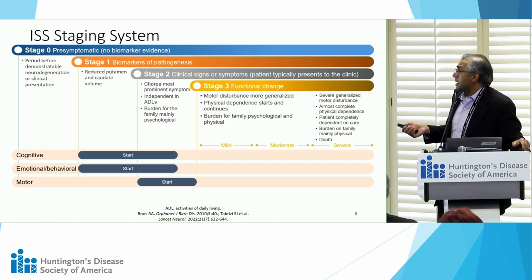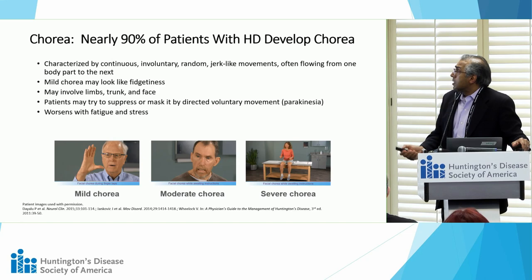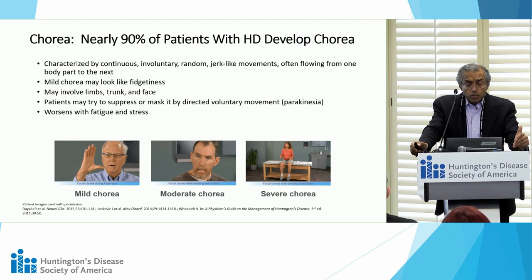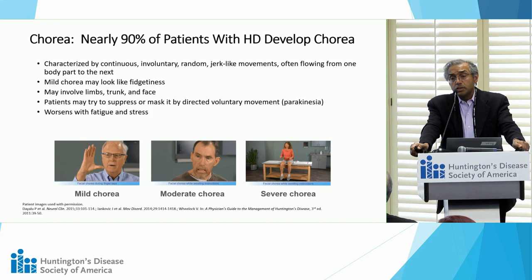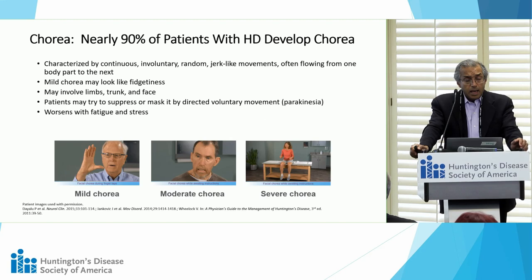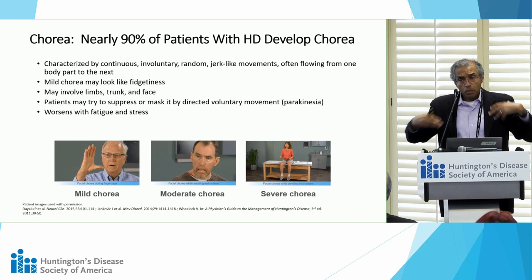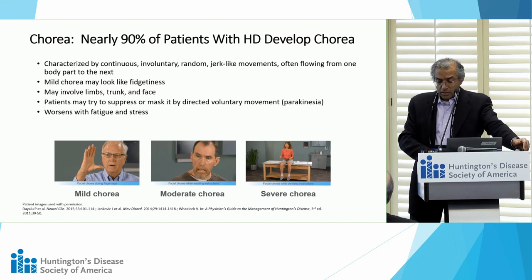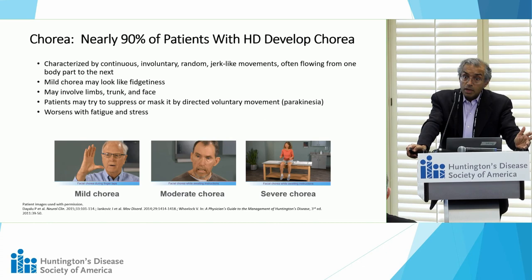We'll focus mainly on stages two and three, and specifically on chorea, which occurs in more than 90% of patients with Huntington's disease. Chorea refers to random flowing movements or quick jerk-like movements that are not predictable — they vary from body part to body part and in direction. Initially when mild, they may look just like fidgetiness. They typically begin distally, for example in the fingers, and spread to more proximal body parts and the face. Most involuntary movements are worsened when an individual is stressed — physically or emotionally — such as when asked to do arithmetic.